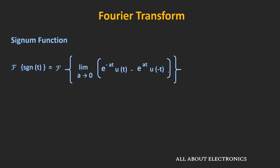Or if we write it in terms of ω, then it is equal to 2 divided by jω. That means the Fourier transform of this signum function is equal to 2 divided by jω, or it can be written as 1 divided by j times πf.